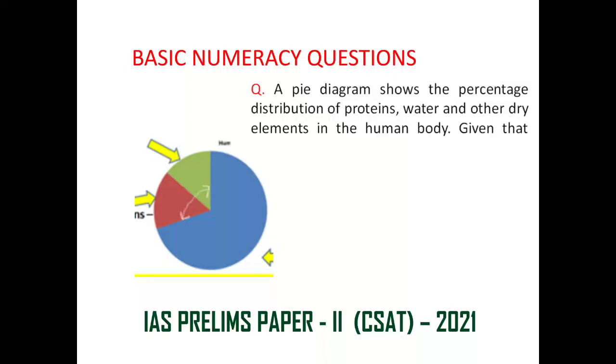Today we will see a question of basic numeracy which was asked in IAS prelims paper 2 CSAT 2021. This question is related to pie charts.